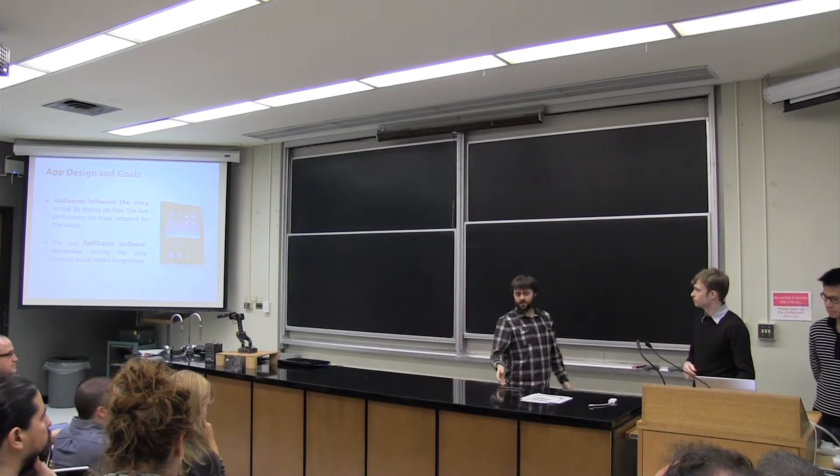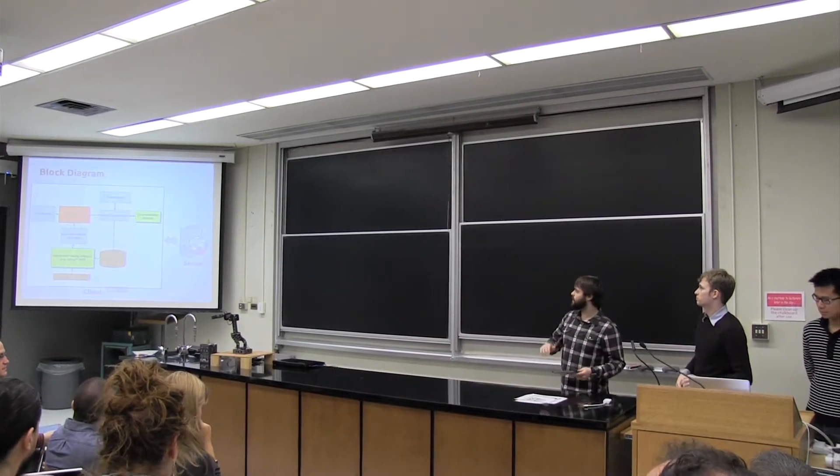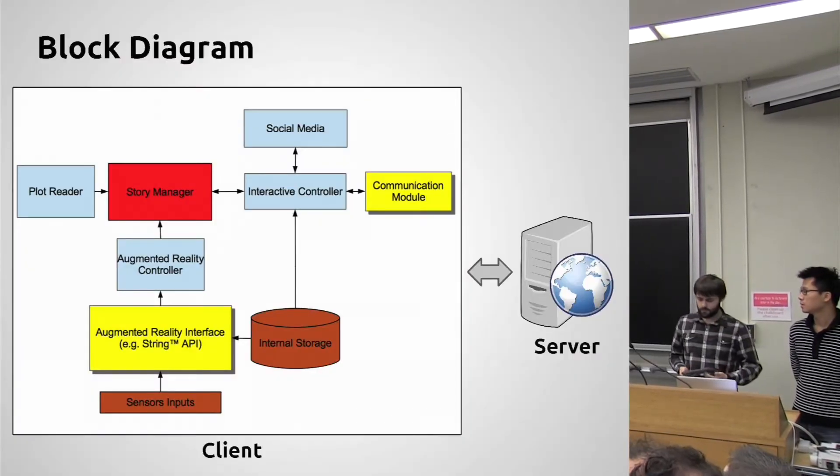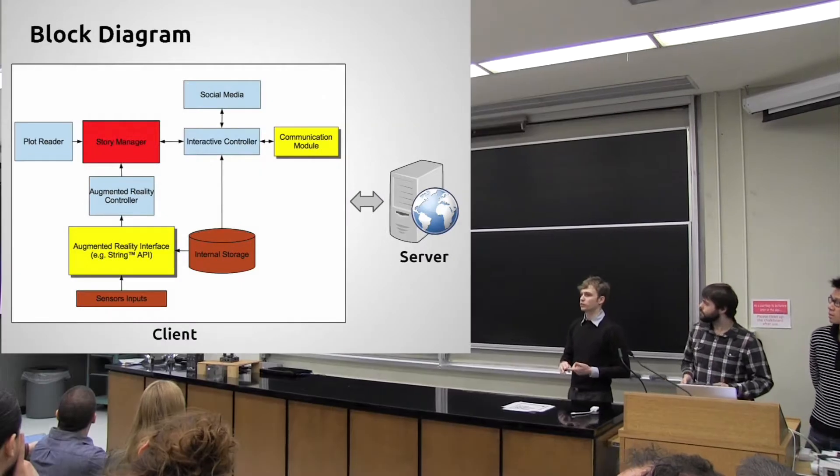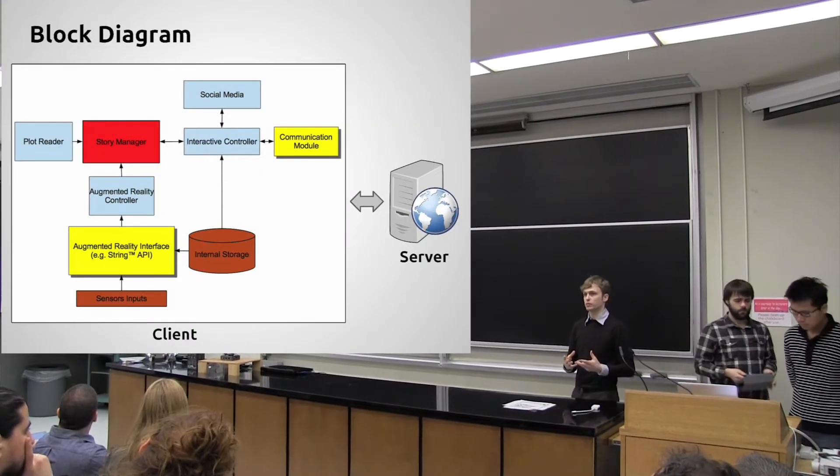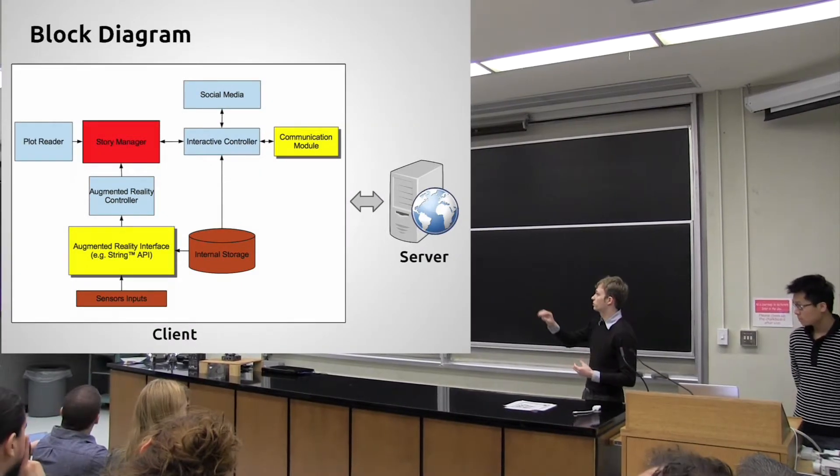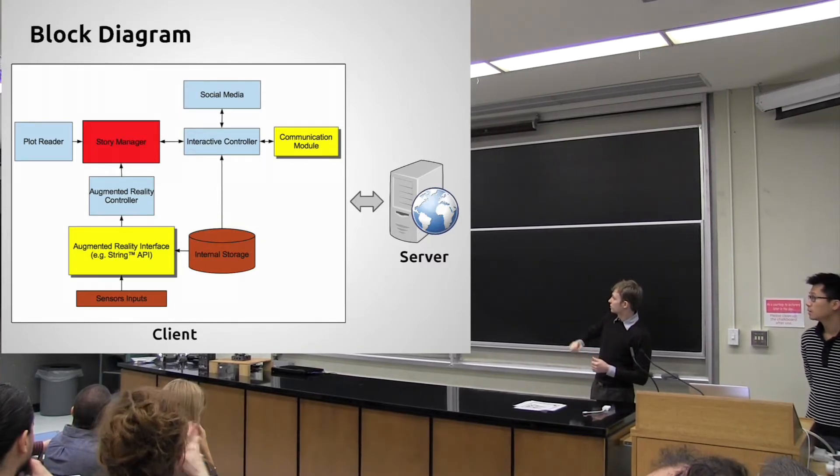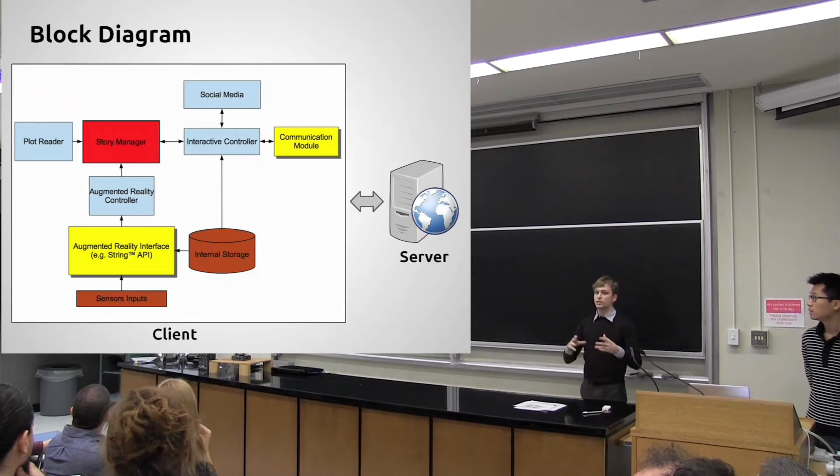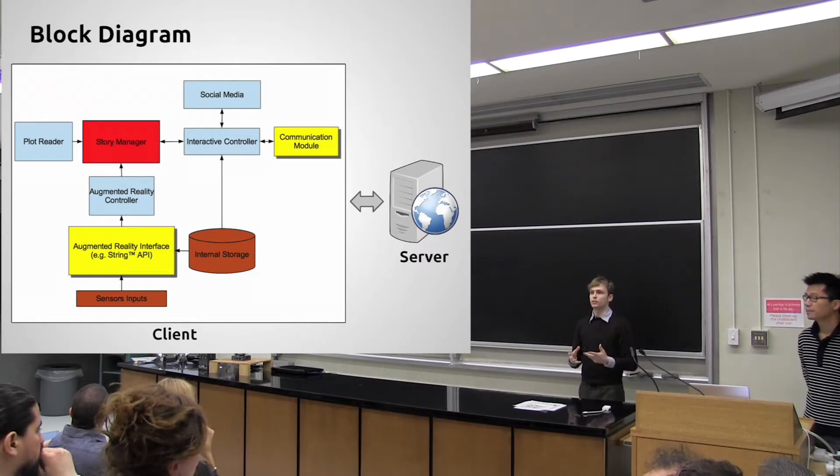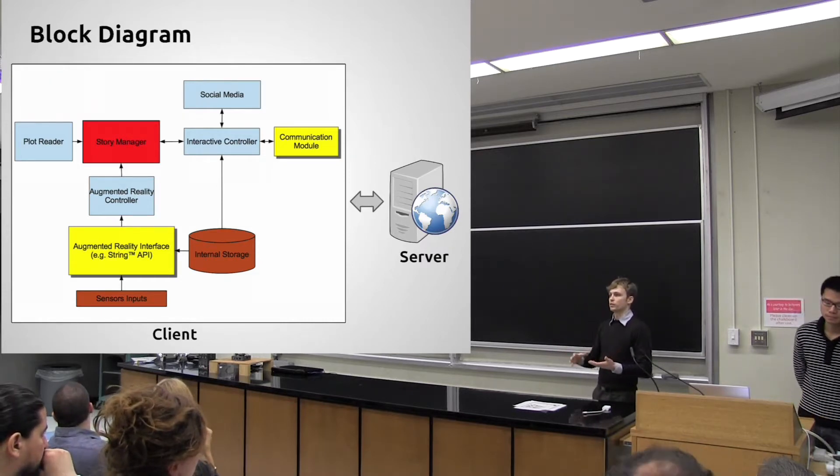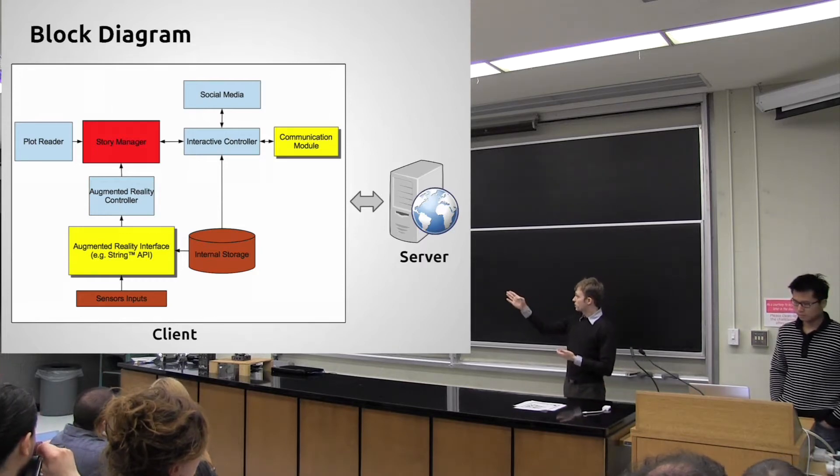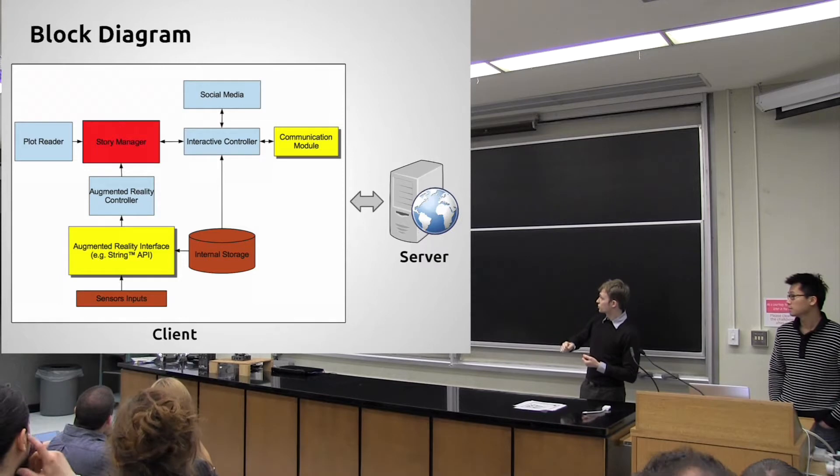We'll pass it over to Remi, who's going to talk about what's going on in the hood. So, this is the block diagram for the client. We have both the client and the server, but for the scope of this presentation, we only wanted to display the block diagram for the client. We have in the middle something called the interactive controller, which is basically representing all of the interfaces. What are they connected to?